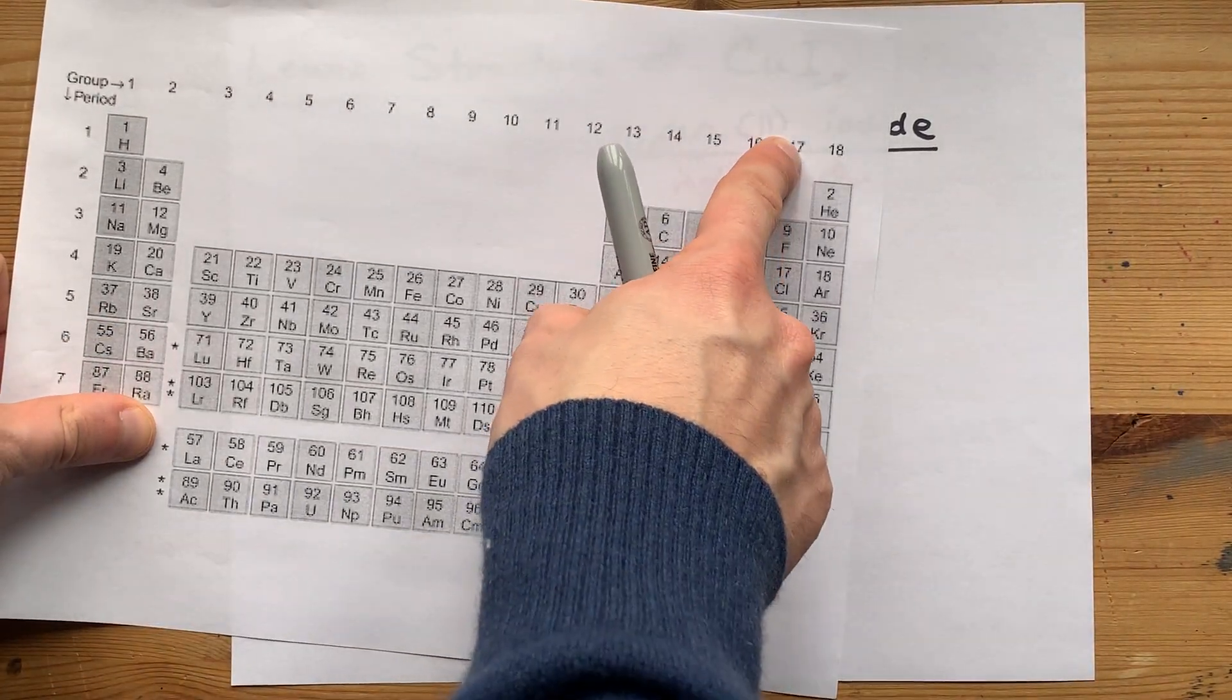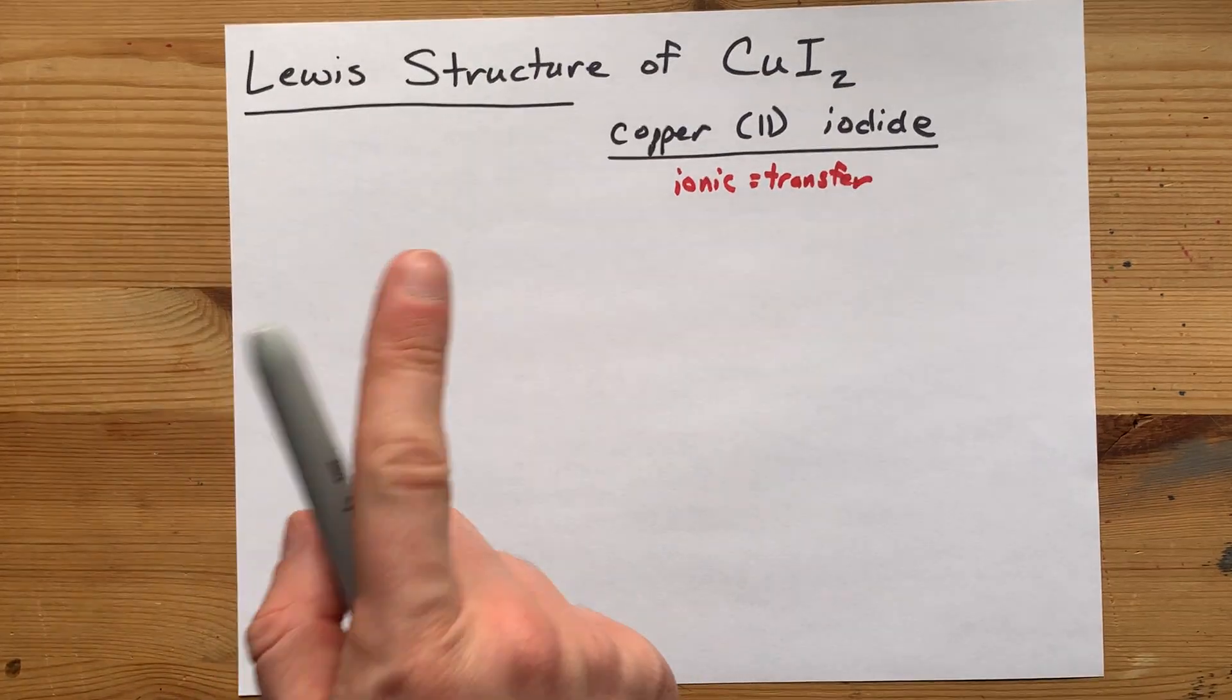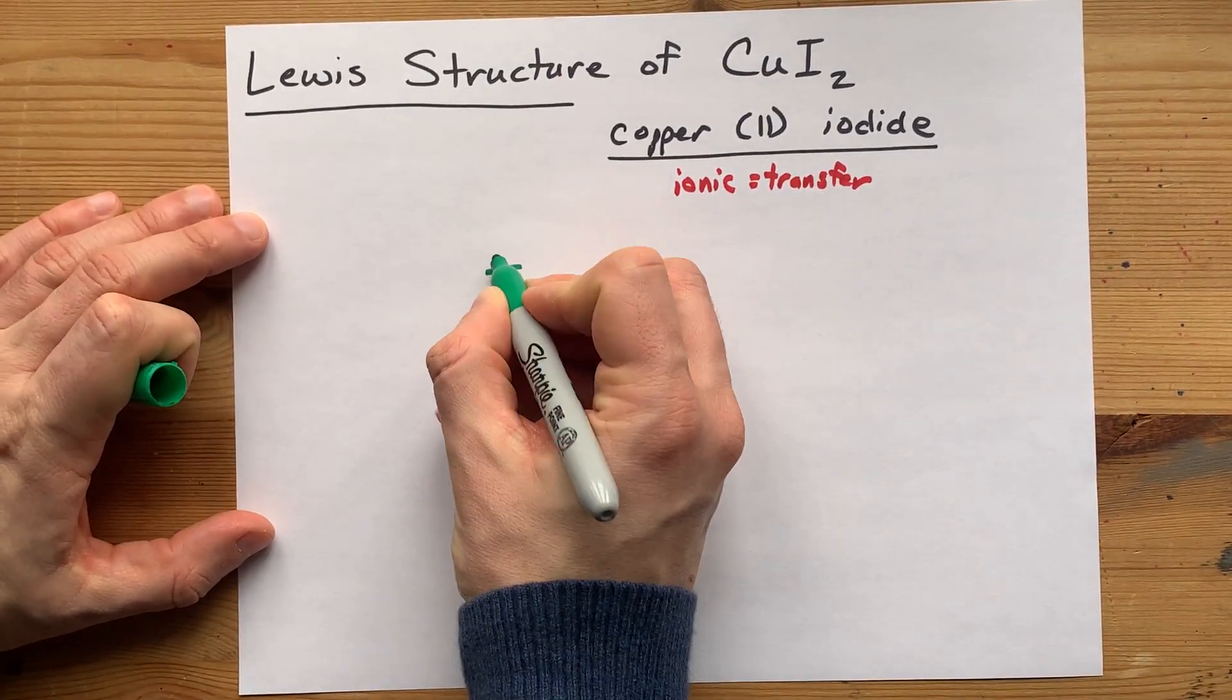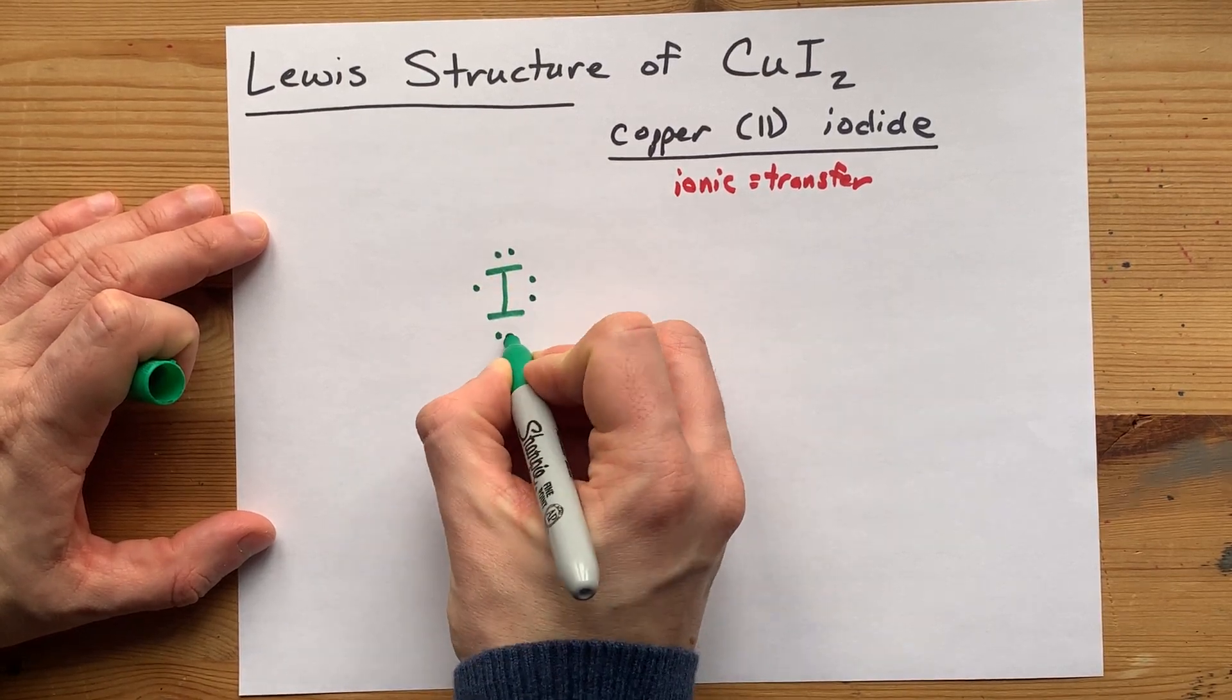Iodine, in group 17, brings seven valence electrons with it: I, one, two, three, four, five, six, seven.